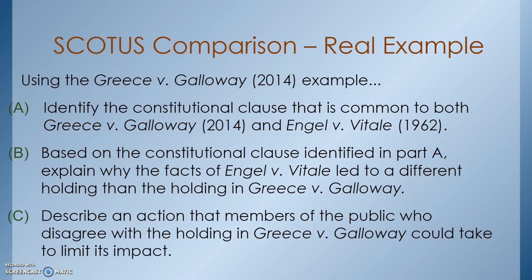If we look at this as an FRQ question, you would use that explanation of Greece v. Galloway (2014), and then identify a constitutional clause that's common to both Greece v. Galloway and Engel v. Vitale. Remember, Engel v. Vitale is one of the 15 cases you have to know inside and out — so that identification is worth one point. You'd get a second point based on how the facts were different. Then you would need to describe an action that members of the public who disagree with the holding could take to limit its impact. We worked on that one in class.